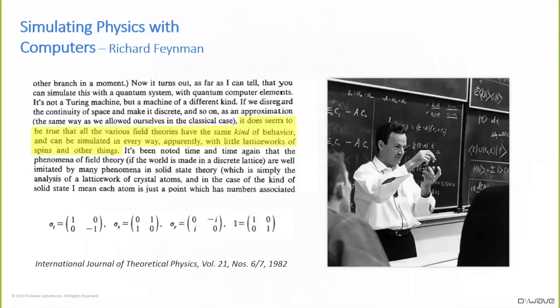I'll start the story back in around 1982. This is a picture of Richard Feynman. Richard Feynman was a brilliant theoretical physicist, and in the early 80s, Feynman made an observation which was not particularly deep, but he took it to a very interesting place.